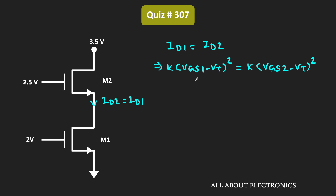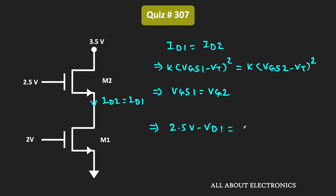We have written the expression of drain current in the saturation region. From this, we can say that VGS1 is equal to VGS2. Now here, VGS2 is equal to 2.5V minus VD1, because the source of M2 is connected to the drain terminal of M1. And that should be equal to VGS1, which is equal to 2V minus 0. That means if M1 is also operating in the saturation region, then voltage VD1 will be equal to 0.5V.